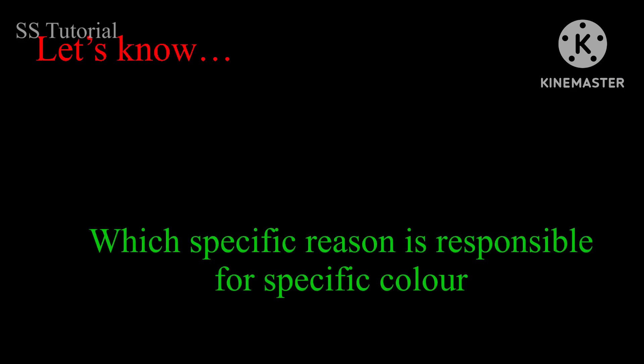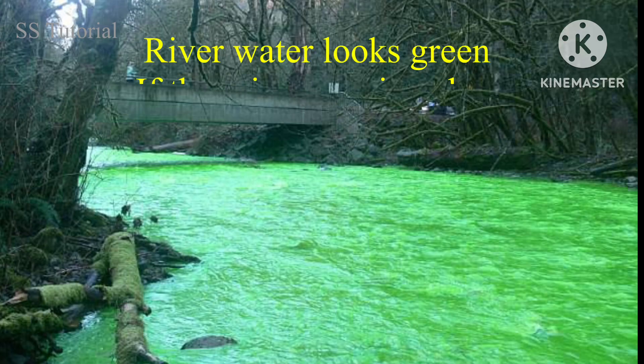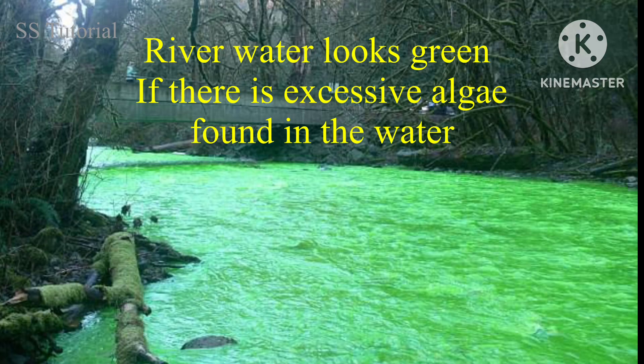Let's understand why river water looks different in color. If there are more algae and phytoplankton in the river, then due to the chlorophyll in their bodies, river water looks green in color.